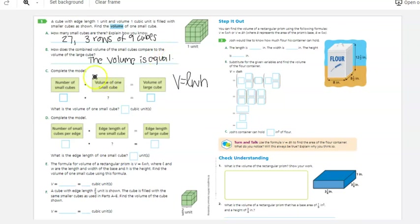We're not going to do the rest of this because it's going to be very confusing to you. So we're going to go on over to page 423 to step it out. You can find the volume of a rectangular prism using the following formulas. Volume equals length times width times height, or volume equals a big B and an H.